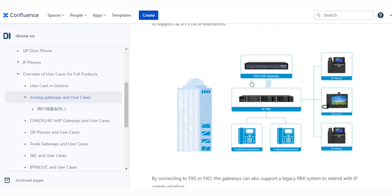This is an overview in general. This is an FXO gateway that connects to an IPBX. Under the IPBX you can have IP phones, softphones, and FXS. If you want to make an incoming or outgoing call, you use the PSTN line connected to the FXO analog gateway.